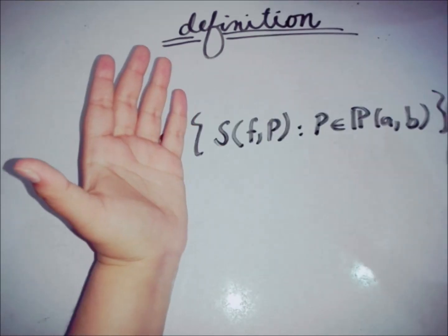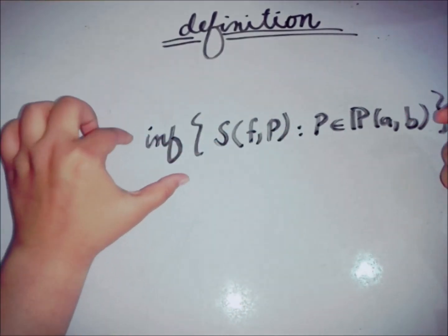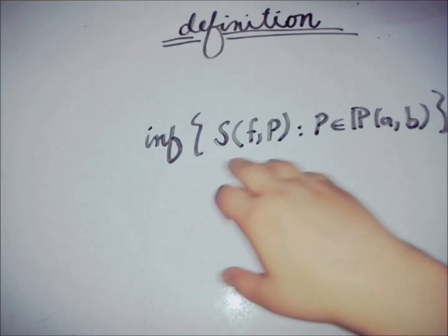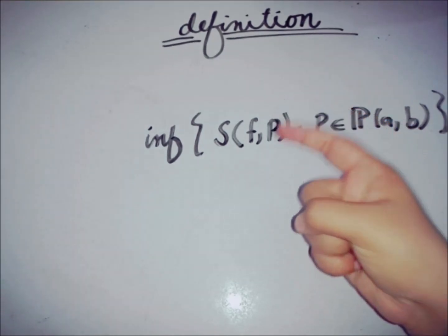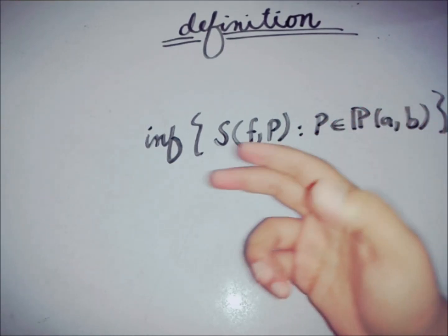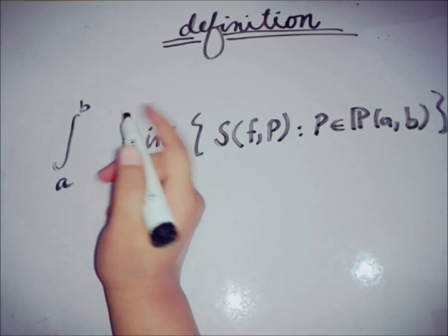We can write the set of all possible Riemann upper sums taken from all possible partitions P. If we take the infimum of these upper sums, this gives the definition of the Riemann upper integral — the infimum taken from the set of values for every possible partition in the set of partitions. From that set of values we find the infimum, and this infimum is the upper Riemann integral.